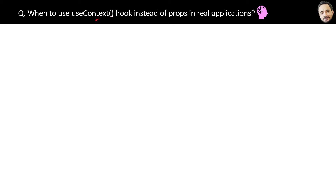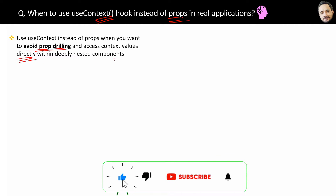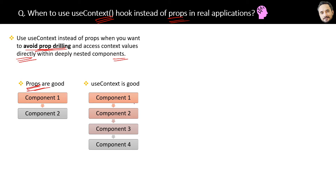When to use the useContext hook instead of props in a real application — one line answer: you should use the useContext hook instead of props when you want to avoid prop drilling and access context values directly within deeply nested components. For one level of parent-child, props are simple and good, but for passing data at multiple levels — parent to child to grandchild and further — useContext is a better way.